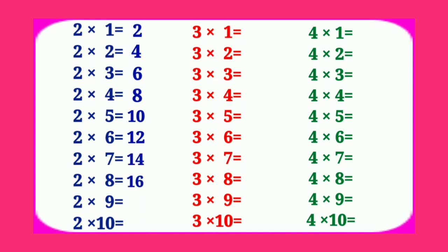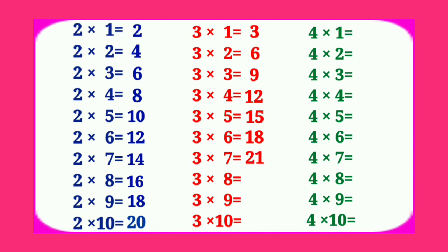2 9's are 18, 2 10's are 20. Table of 3. 3 1's are 3, 3 2's are 6, 3 3's are 9, 3 4's are 12, 3 5's are 15, 3 6's are 18, 3 7's are 21.